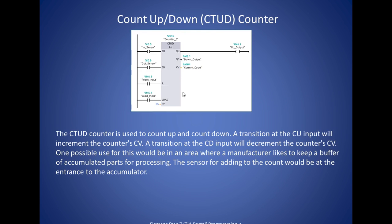Count up down counter has inputs for incrementing and decrementing the count value. And again, the output is true whenever the count value is equal to or greater than the preset value.